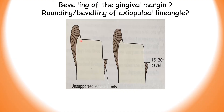The next question: why is the axial pulpal line angle rounded? The pulpal floor meets the axial wall at the axial pulpal line angle. Your answer: the axial pulpal line angle is rounded to reduce stress concentration in that area, and also to increase the bulk of amalgam so that it does not fracture under occlusal loading.